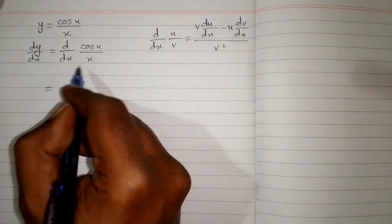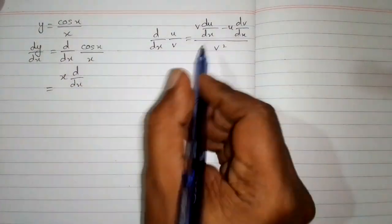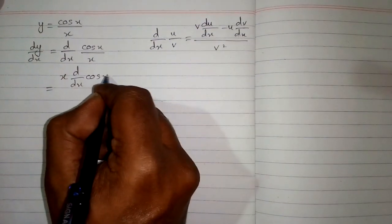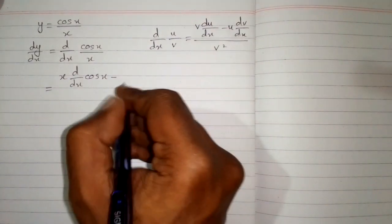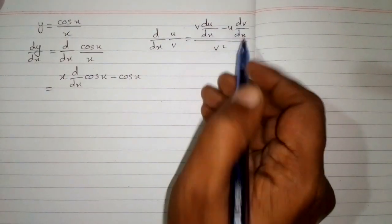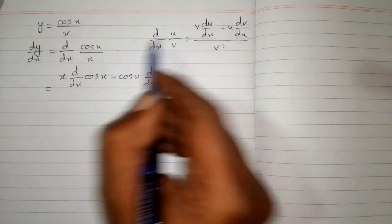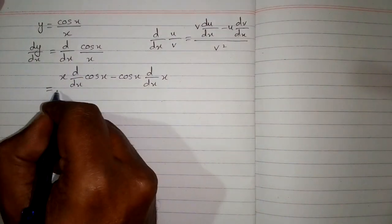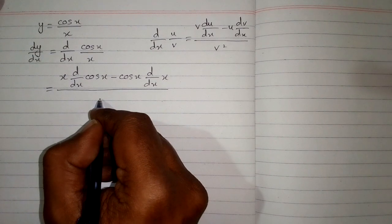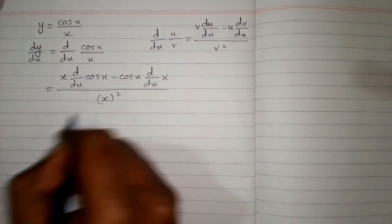First we will write v and v is x, then the derivative of u and u is cos x. So we will write d/dx of cos x minus u. So u is cos x and then the derivative of v. We will write d/dx of x because v is x. And in the denominator we will write v squared. So we have x in place of v, so we will write the square of x.